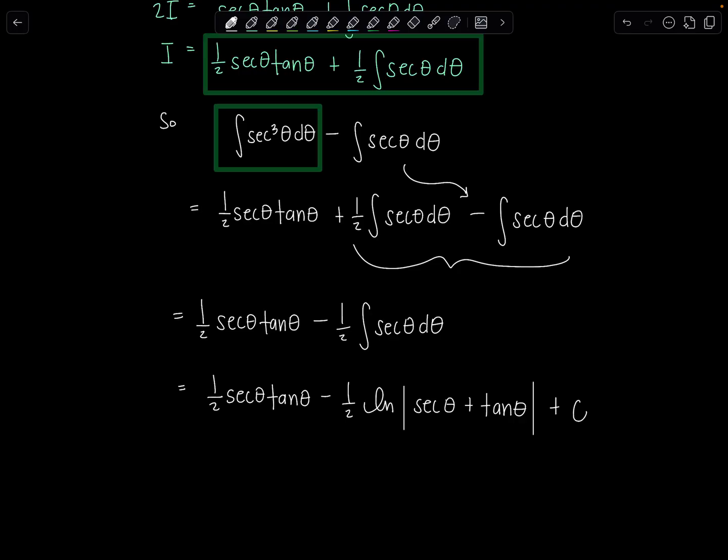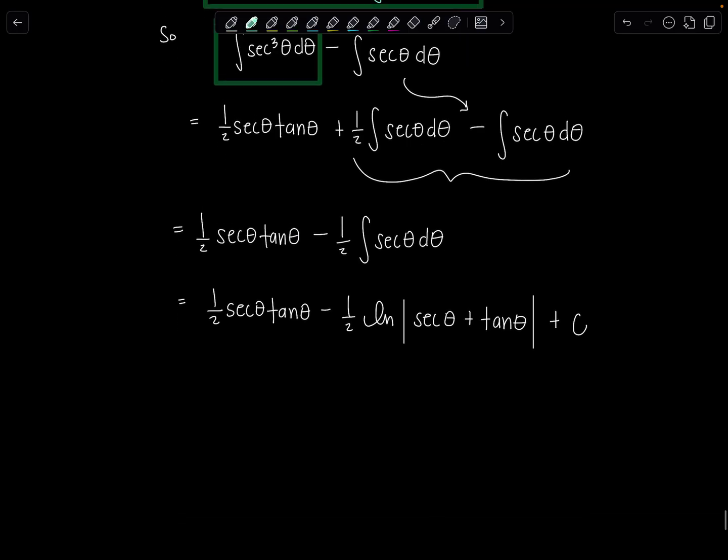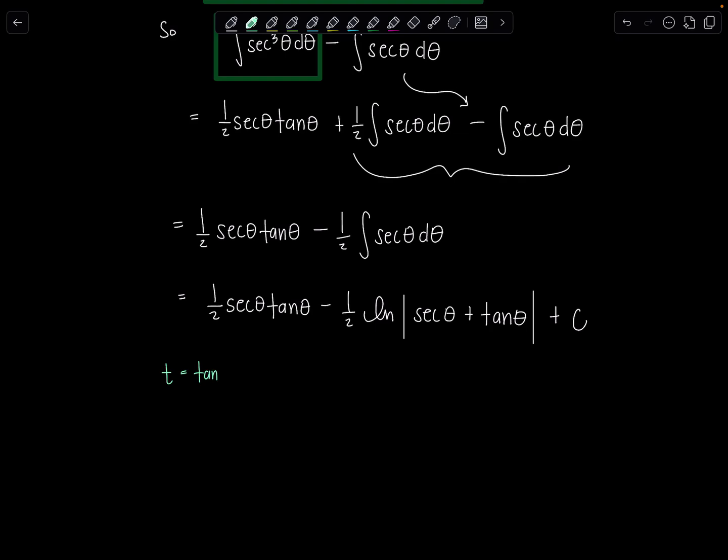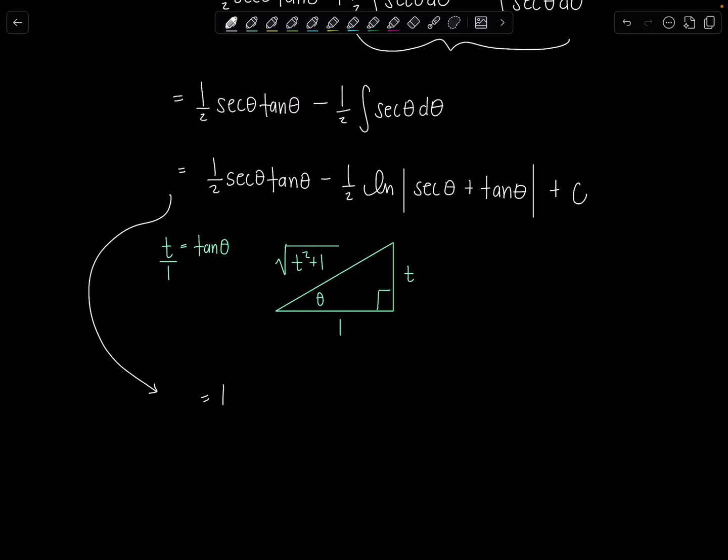Now it's time to go back to the original variable before trig sub. So we had let t equal tangent theta so think of that as t over one, so tangent theta is ratio of opposite over adjacent sides so then the hypotenuse would be square root t squared plus one. So let's use this triangle now go back to t's so we have one half secant theta would be ratio of hypotenuse over adjacent so one half times just square root of t squared plus one times tan theta's t minus one half natural log absolute value secant theta is rad t squared plus one plus tangent theta is just t plus c.